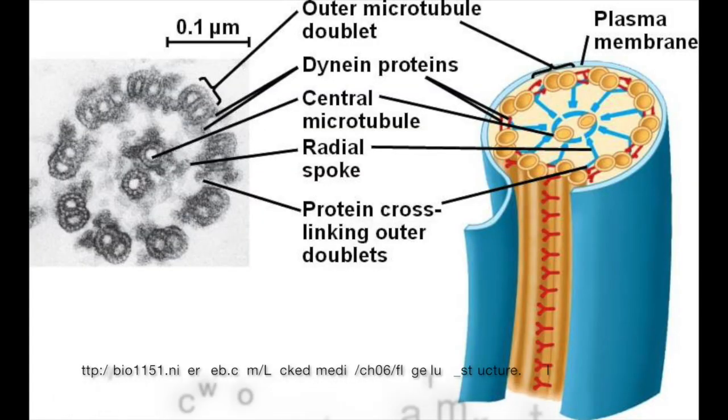A couple key clues about how the eukaryotic flagellum moves were discovered by removing the cellular membrane from a flagellum and exposing the inside to ATP. When this was done, the membraneless flagella beat normally. This means two things.